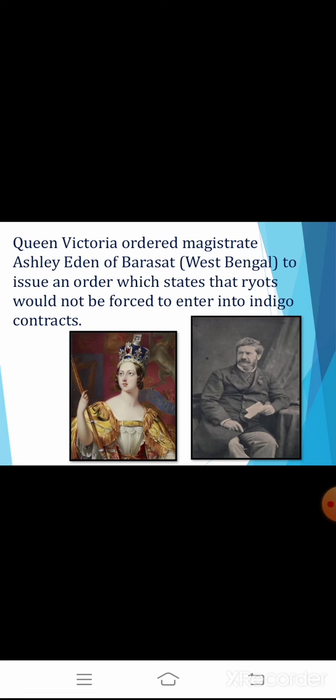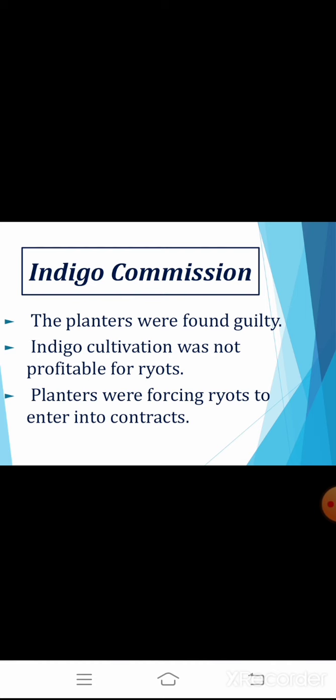As the rebellion spread, intellectuals from Calcutta rushed to the indigo districts and wrote about the misery of the Riyots and the horrors of the indigo system. Worried by the rebellion, the government brought in the military to protect the planters from assault and set up the Indigo Commission to inquire into the system of indigo production. The commission held the planters guilty and criticized them for their coercive methods — methods used with force or threat — against the indigo cultivators. It declared that indigo production was not at all profitable for the Riyots.